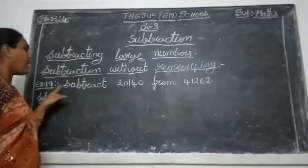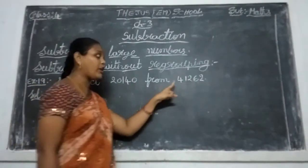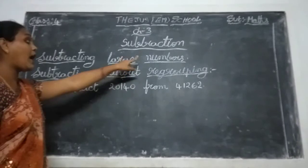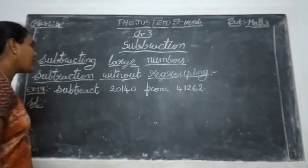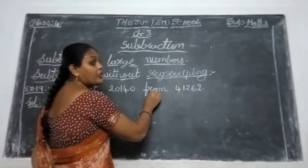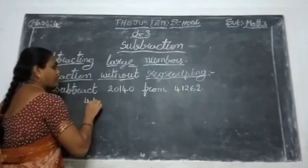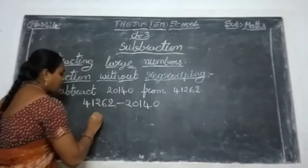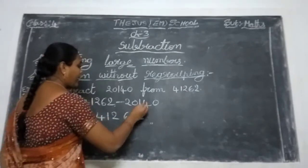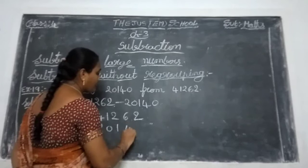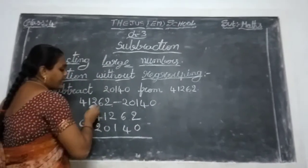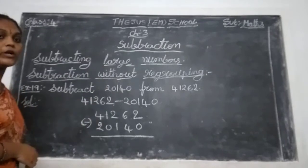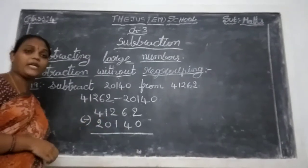See another example 19: subtract 20,140 from 41,262. Okay, this is subtraction with large numbers — how to handle without regrouping. Already explained: the number after 'from' you write first, put the minus symbol, then write the other number. So write 41,262 first and 20,140 as the second number.